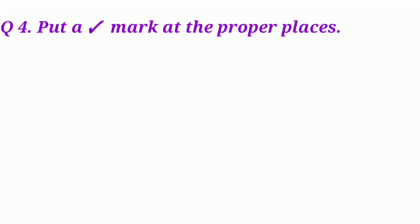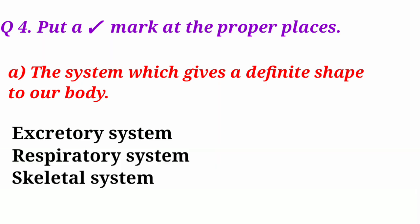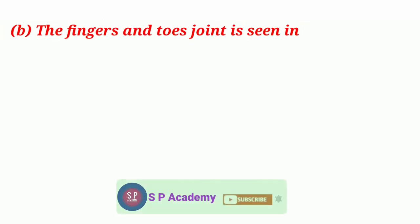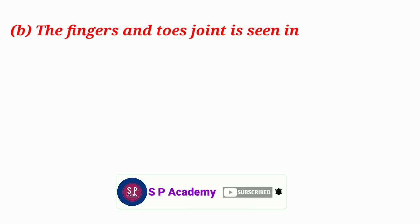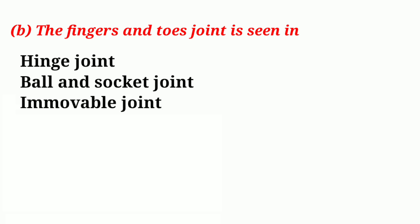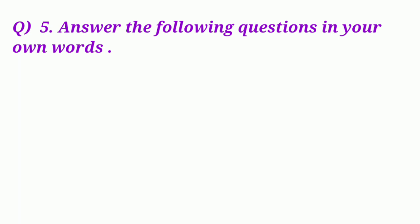Question 4: Put a correct mark at the proper places. a. The system which gives a definite shape to our body — Answer: Skeletal system. b. The joint seen in fingers and toes — Answer: Hinge joint.